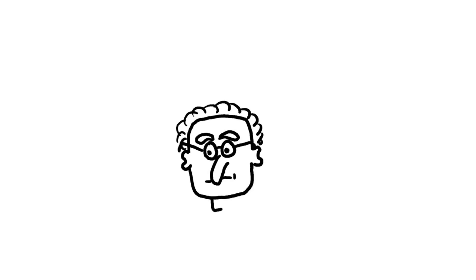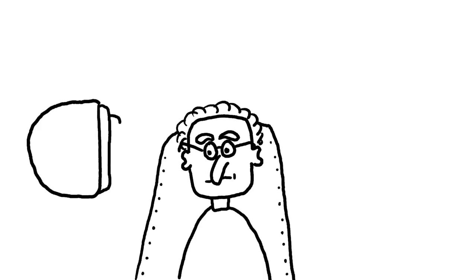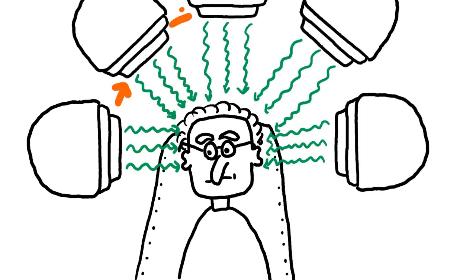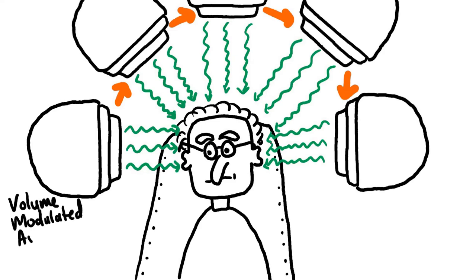In recent years the onset of volumetric modulated arc therapy, or VMAT, has allowed for radiation to be swept in 360 degrees around the patient, all while being reshaped by a high-density collimator so that tumor tissue can be targeted while healthy organs such as the parotid gland can be spared as much as possible. The reshaping of the radiation is optimized automatically by the planning system based on certain constraints set by a treatment planner.